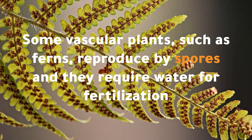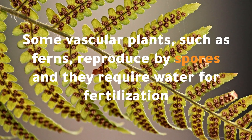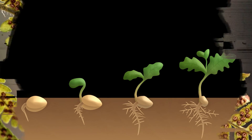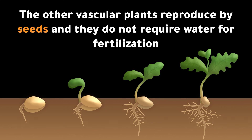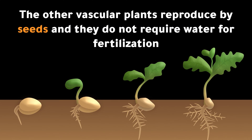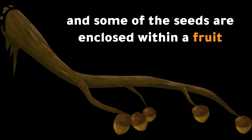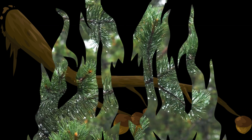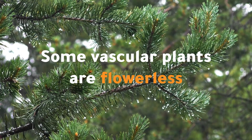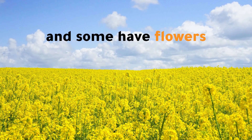Some vascular plants, such as ferns, reproduce by spores, and they require water for fertilization. The other vascular plants reproduce by seeds, and they do not require water for fertilization. Some of the seeds are enclosed within a fruit. Some vascular plants are flowerless, and some have flowers.